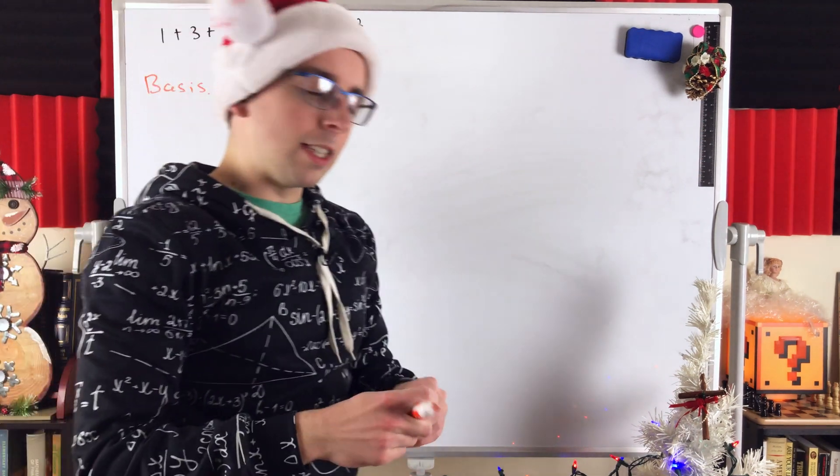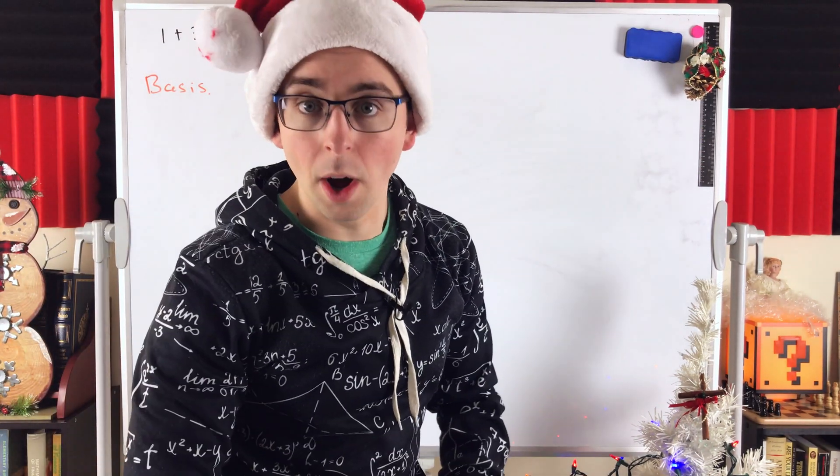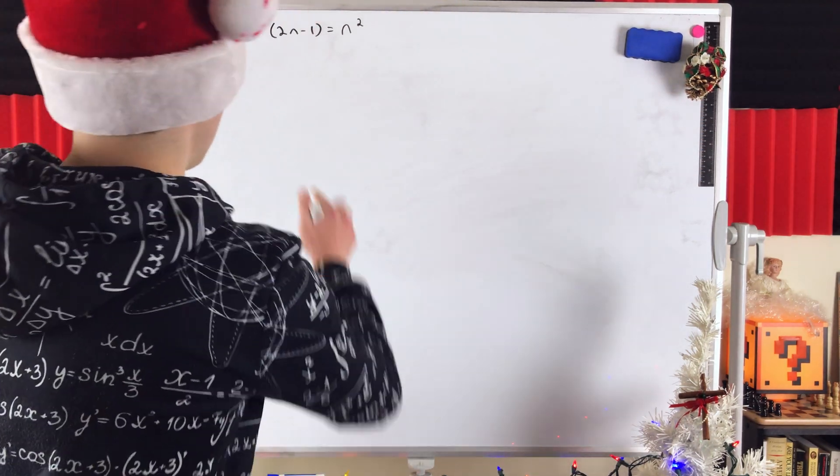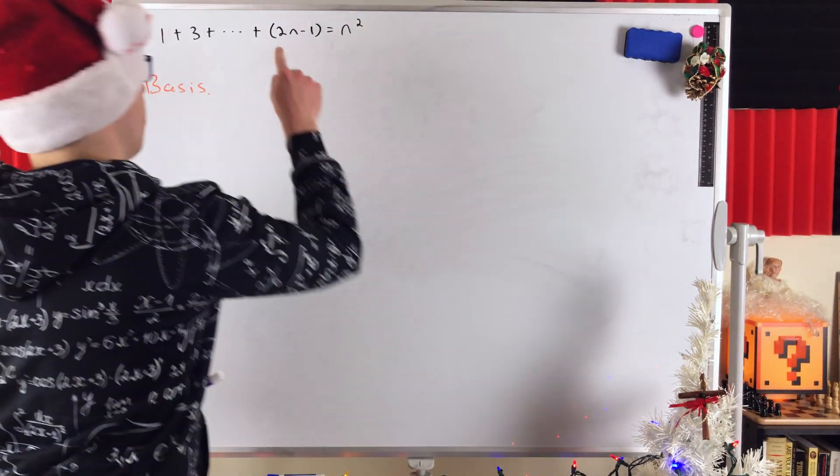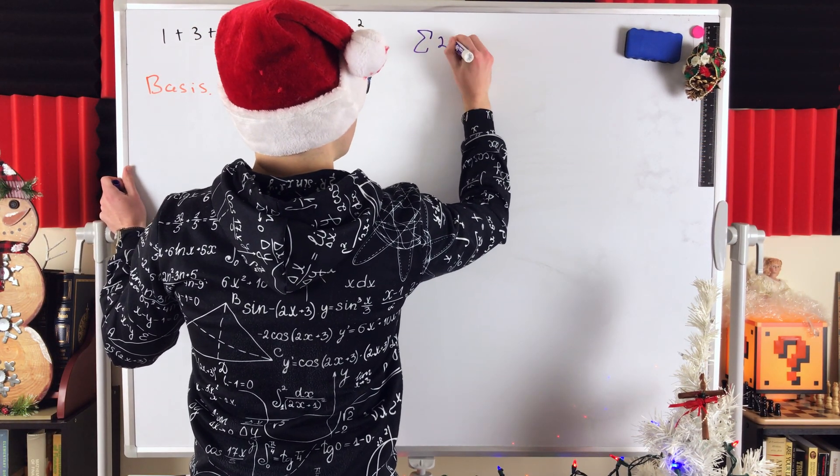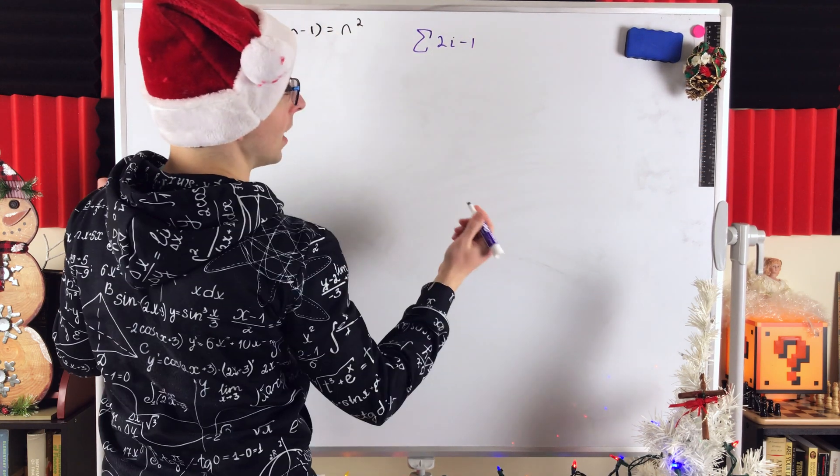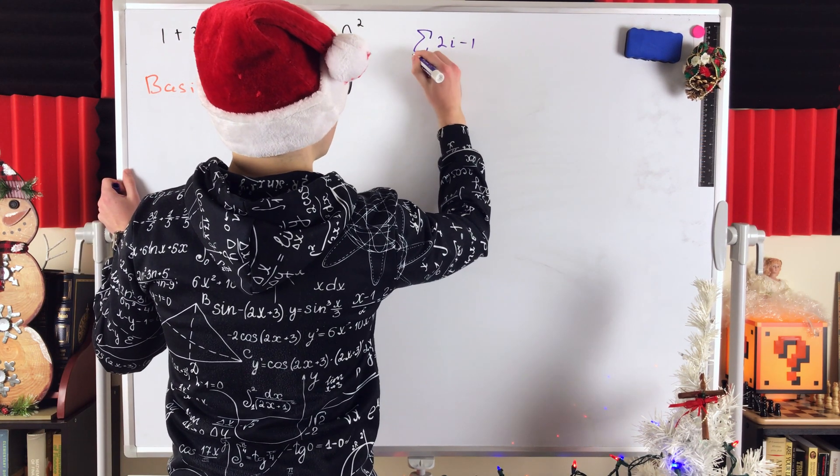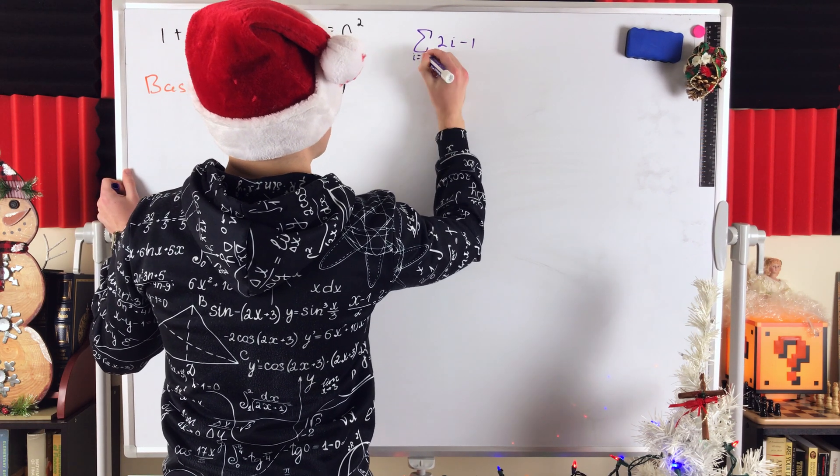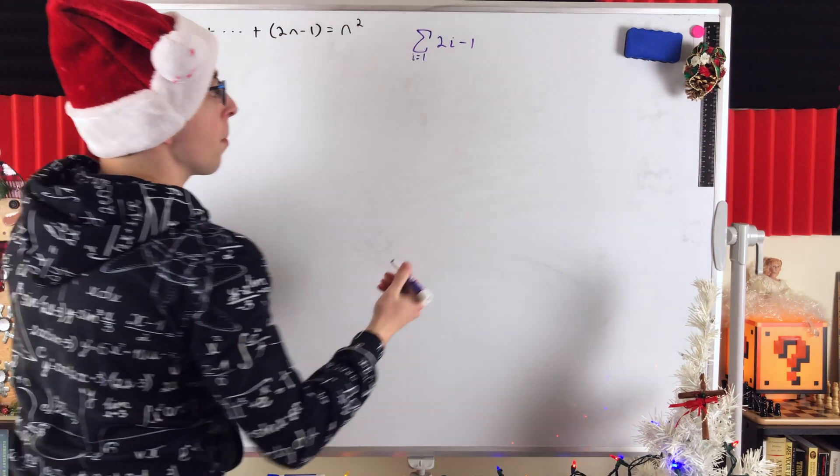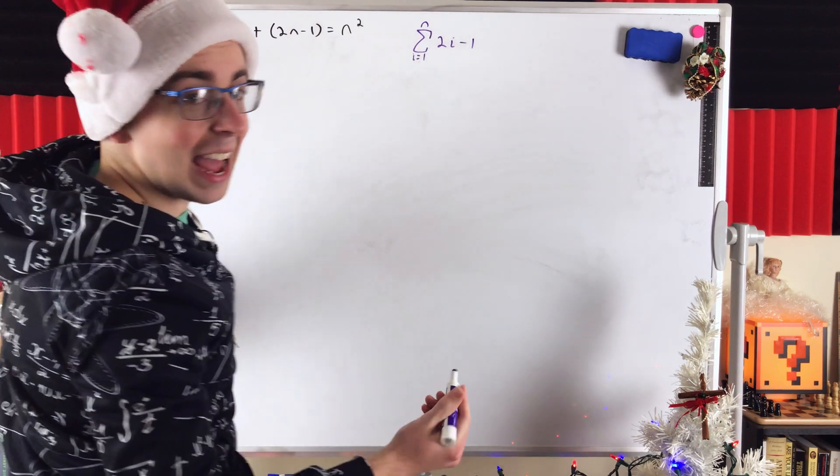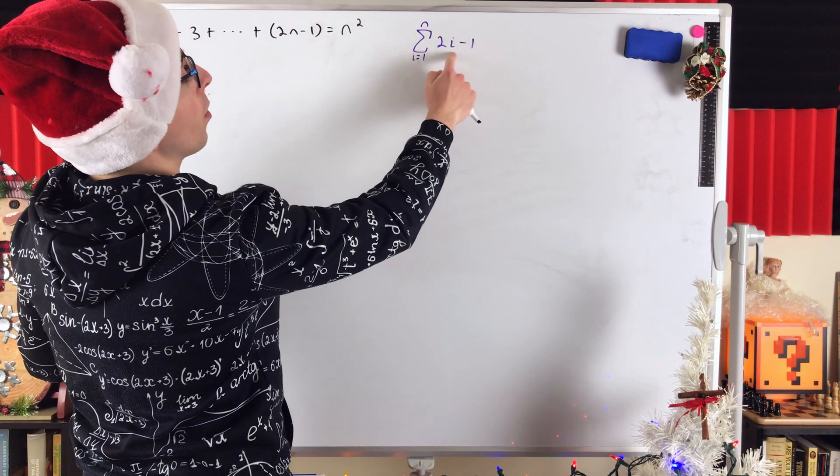Basis step. So, we just have to show that our equality is true for n equals 1, the first natural number. Really quickly, too, just in case you prefer, let's write this equation using sigma notation for this sum. So, we could write it like this. The sum of 2i minus 1 from i equals 1, that's where our natural numbers are starting, from i equals 1 all the way up to n.